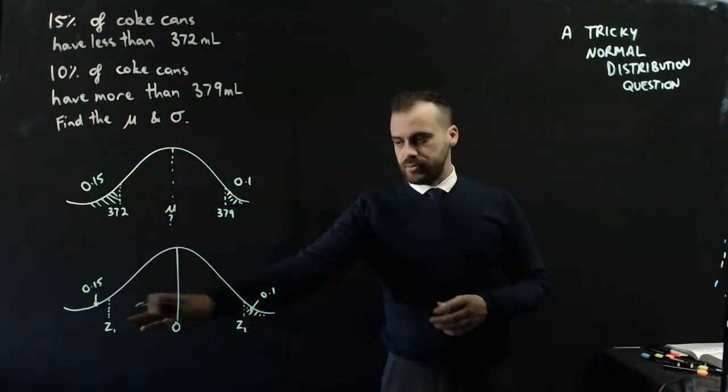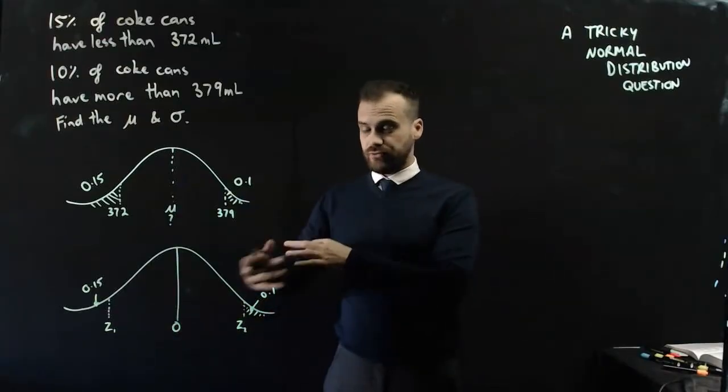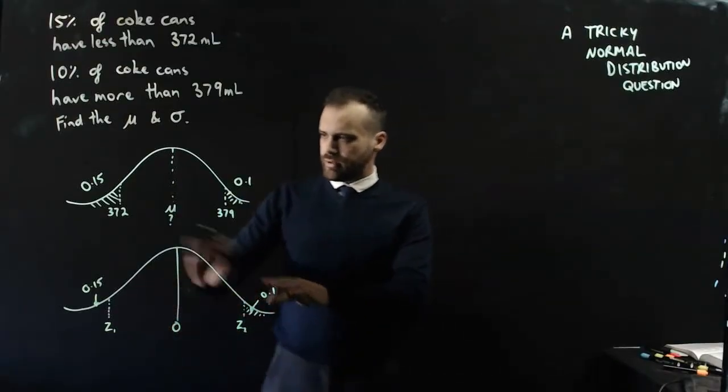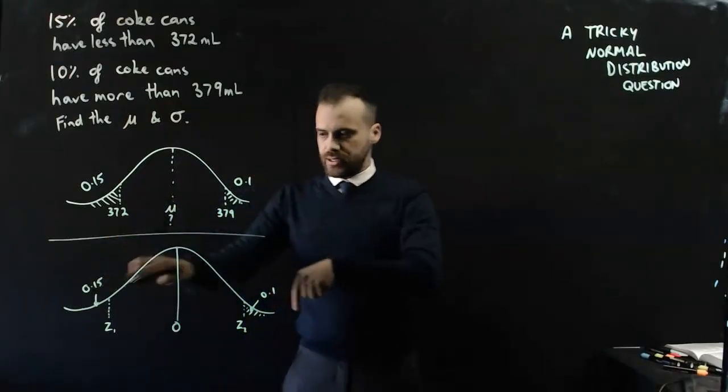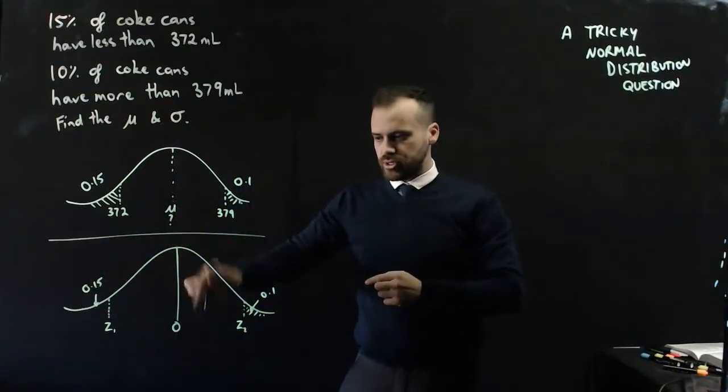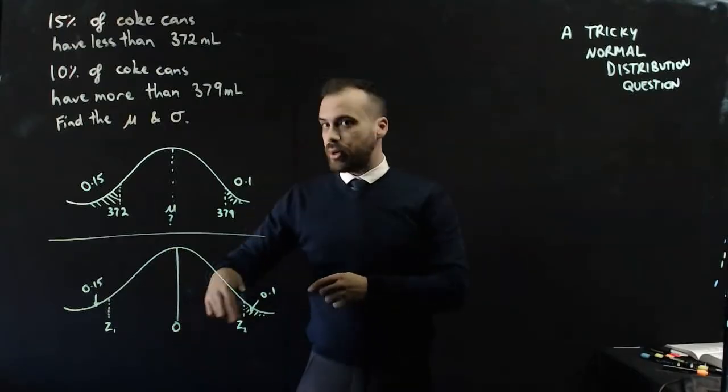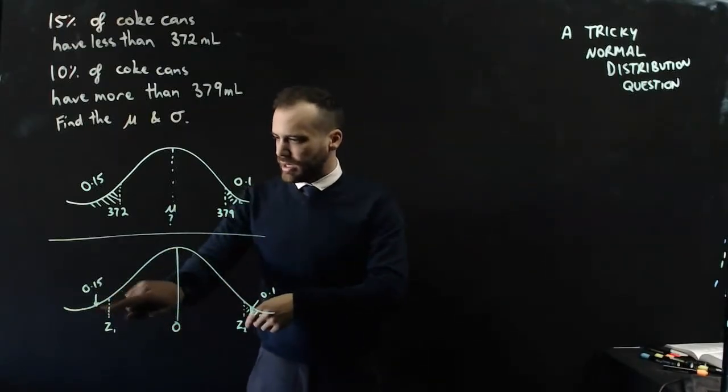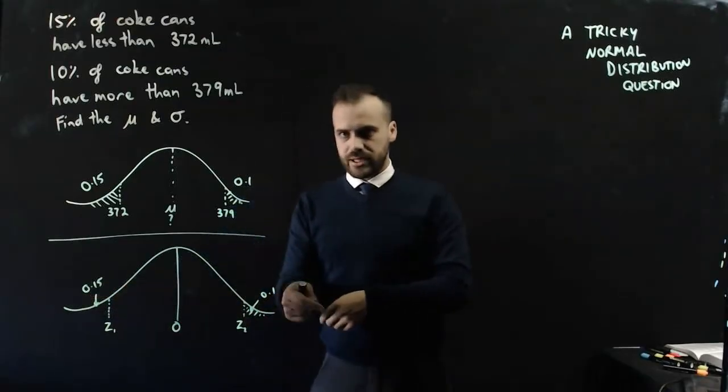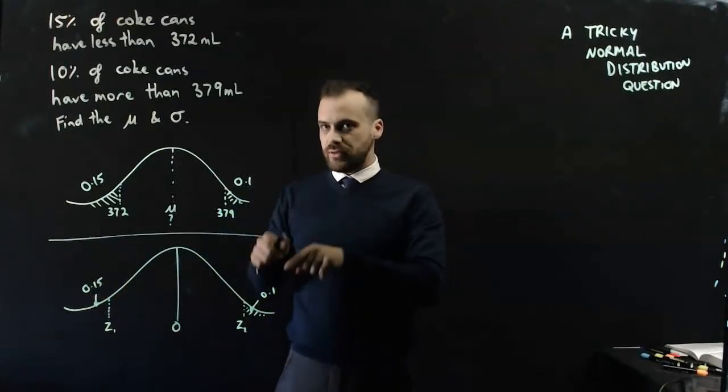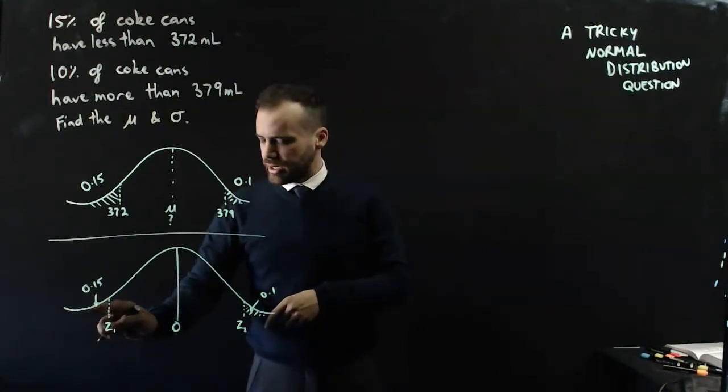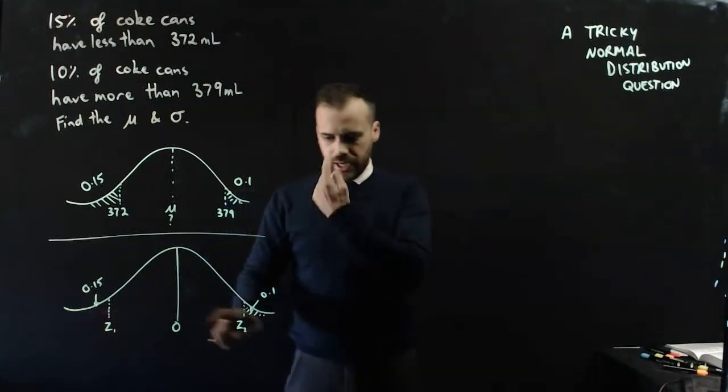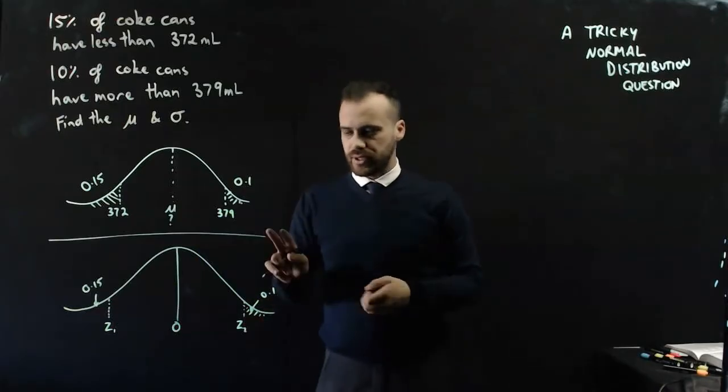Now that I've named them Z1 and Z2, I can actually just find them. This is a standard normal distribution. I know that the mean is 0, I know the standard deviation is 1. I've got a left tail here, I've got a right tail here. So I can use the inverse normal on my calculator to come up with this Z1 value and this Z2 value here.